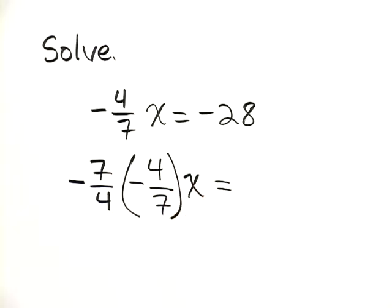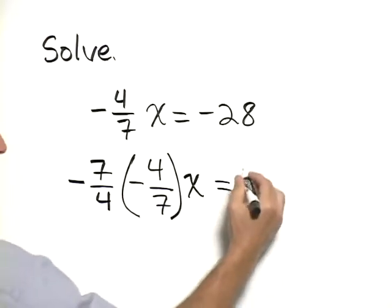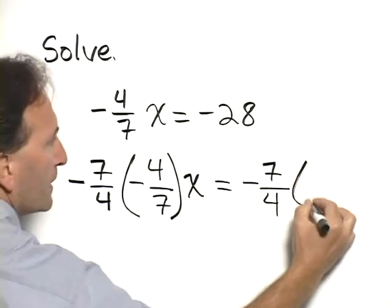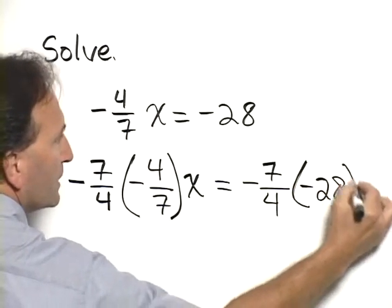And so on the left hand side, we have negative 7 fourths times negative 4 7ths times x. And on the right hand side, we have negative 7 fourths times negative 28.